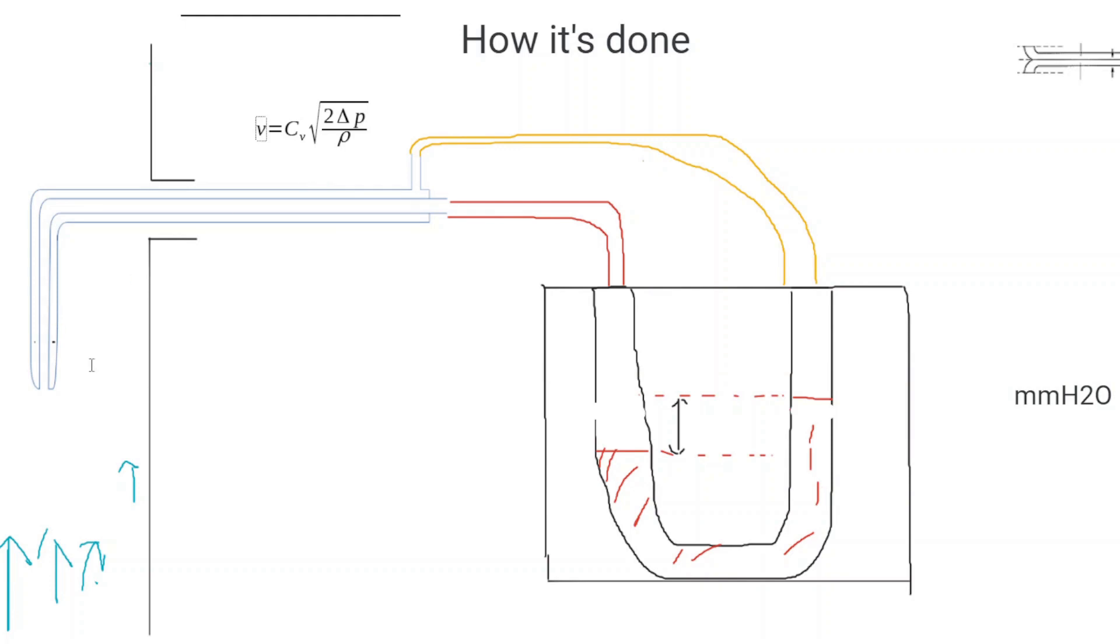For a type 1 pitot tube that cv factor is 0.99 or in some cases people use 1. For a type s pitot tube over here it is 0.84 if your pitot tube is built up to a certain standard and it's not damaged.